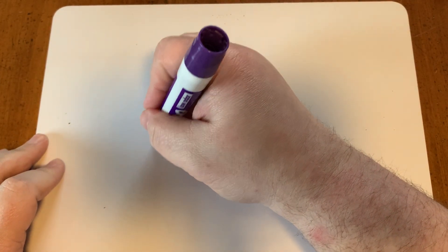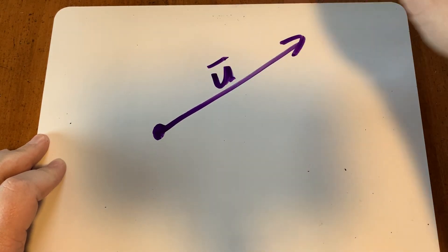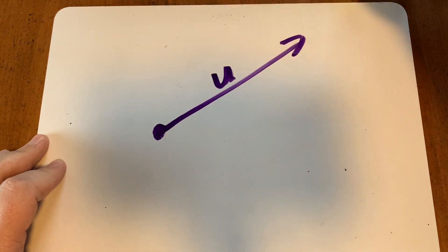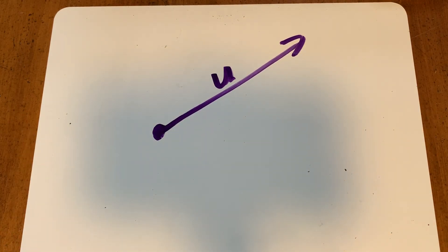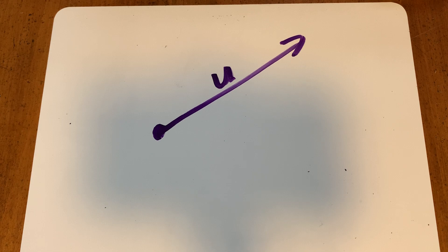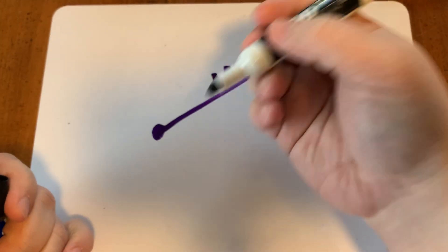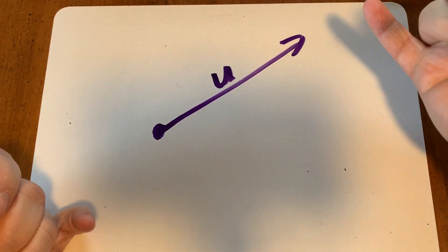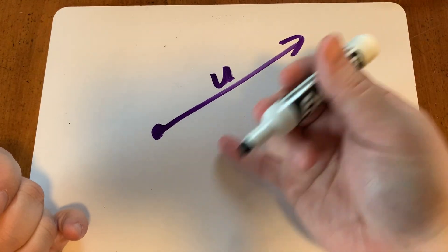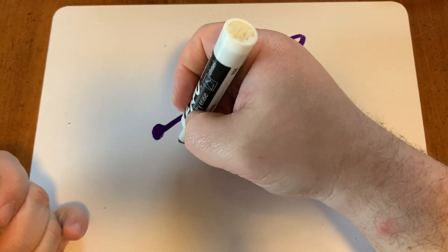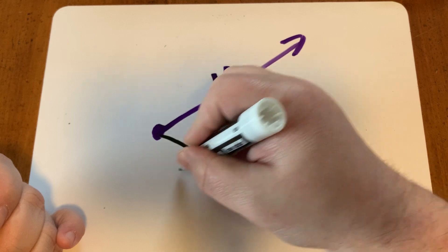Let's talk about this mathematically. If we have a vector U, and a second vector V that we want to project U onto — and vector V can be in any direction except the direction of U — then vector V defines a line. When we project vector U onto vector V, it represents how far along that line vector U would reach.